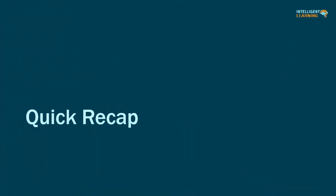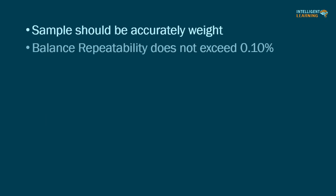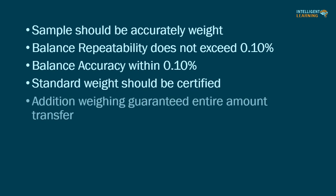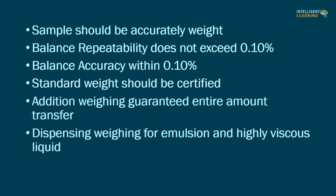Quick recap of this video: samples should be accurately weighed. Balance repeatability must not exceed 0.10%. Balance accuracy should be within 0.10%. Standard weights should be certified. Addition weighing guarantees the entire amount is transferred. Dispensing weighing is used for emulsions and highly viscous liquids.